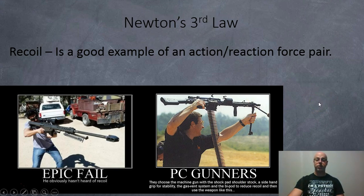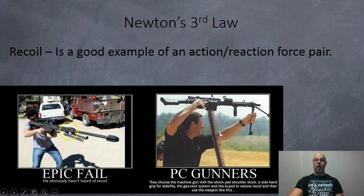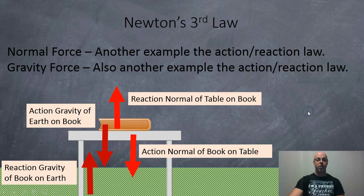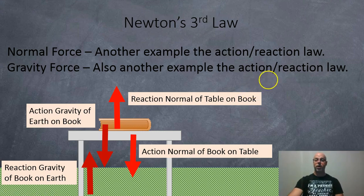Another example is recoil — a good one where people don't realize Newton's third law until they've experienced it. Someone picks up a big rifle, shoots it, and ends up flying backwards. People who've only shot guns in computer games think they know what to do and end up making a mistake.